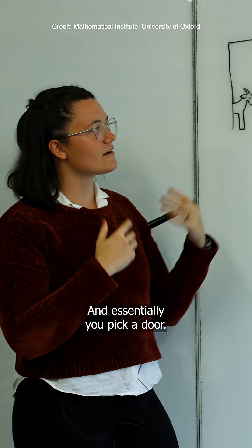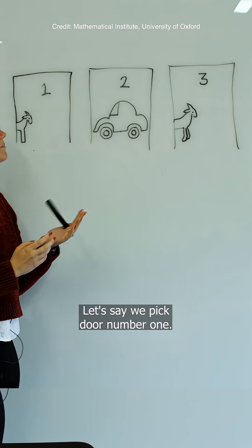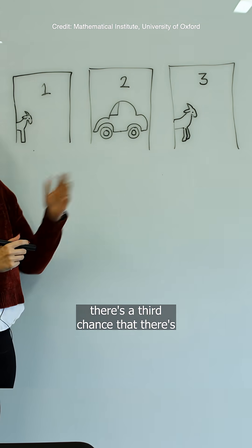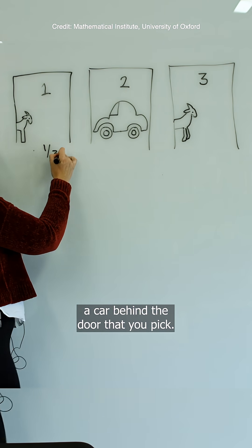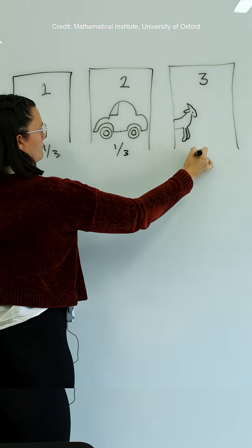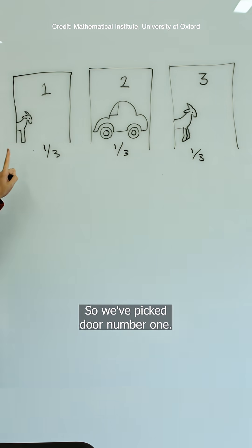You pick a door. Let's say we pick door number one. To start with, there's a one-third chance that there's a car behind the door that you pick.